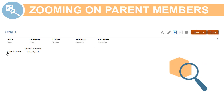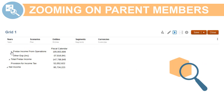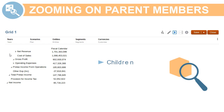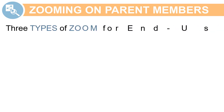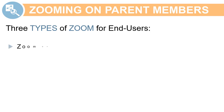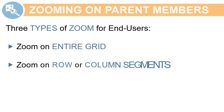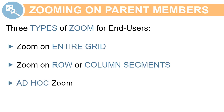Zoom allows you to expand a row or column parent member in a grid to see its children, descendants, or bottom-level members. When you design a grid, you can enable three types of zoom for end users: zooming on the entire grid, which enables zoom for all parent members; zooming on specific row or column segments in a grid; and ad hoc zooming, which allows end users to pick parent members for zooming.